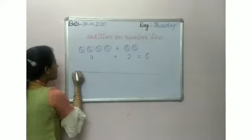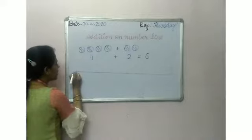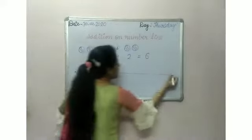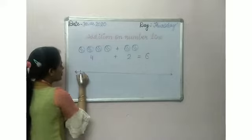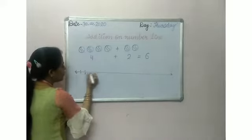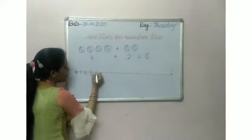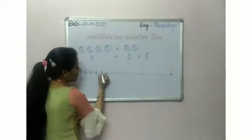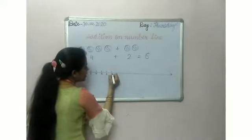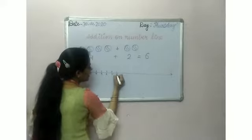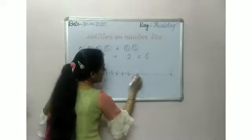This is our number line. I will start from zero: zero, one, two, three, four, five, six, seven, eight, nine, ten.